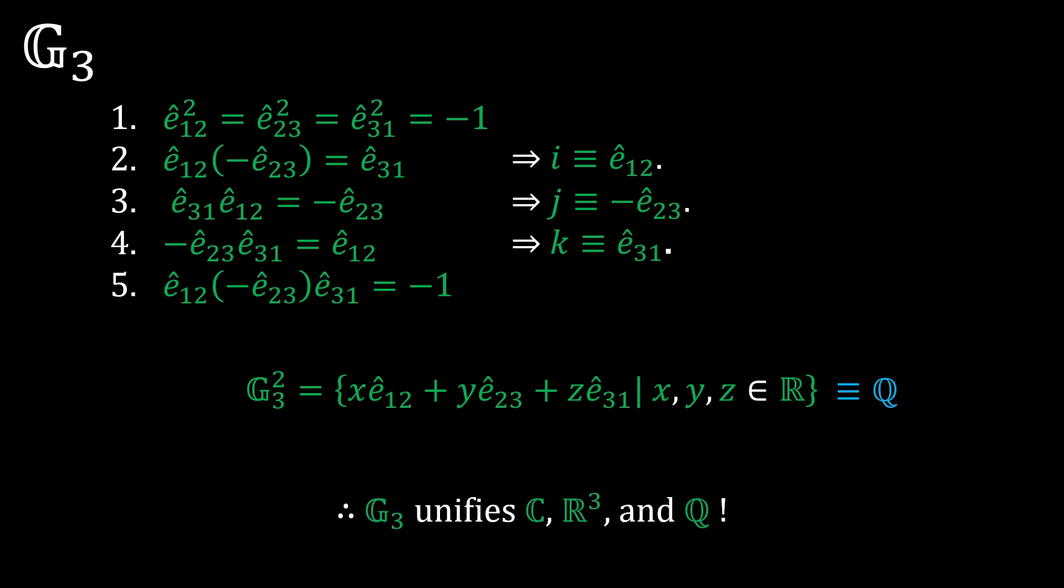All in all, the G3 algebra unifies the complex, real space, and quaternion algebras into one cohesive structure. I mean, that's pretty damn cool. You can also show that the Pauli-Spin algebra of quantum mechanics exists in G3 as well, but I'm saving that for a later video.